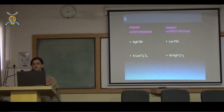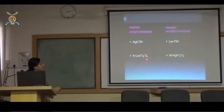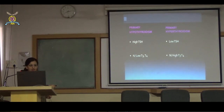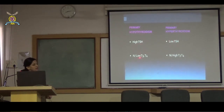In hypothyroidism, T3 and T4 are low. In hyperthyroidism, T3 and T4 are high. When T3/T4 are low, TSH will be high due to loss of negative feedback. So in hyperthyroidism: low TSH and high T3/T4. In hypothyroidism: high TSH and low T3/T4.